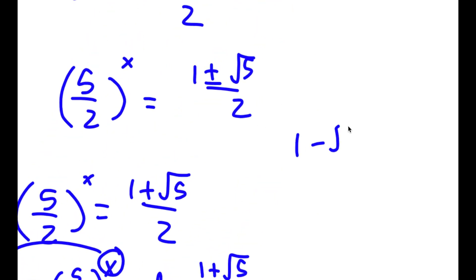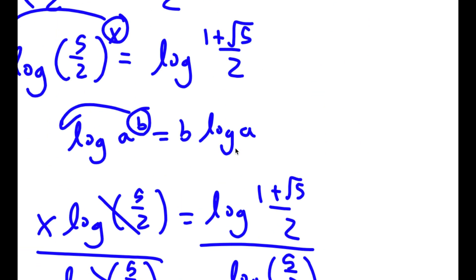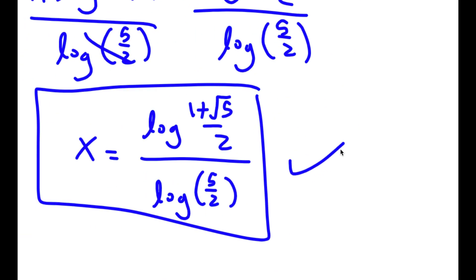Now, 1 minus the square root of 5 over 2 wouldn't work, because 1 minus the square root of 5 is going to be a negative number, and you can't take a positive base to a power and get a negative number. So this case is invalid, and the equation from the positive root is my only solution.